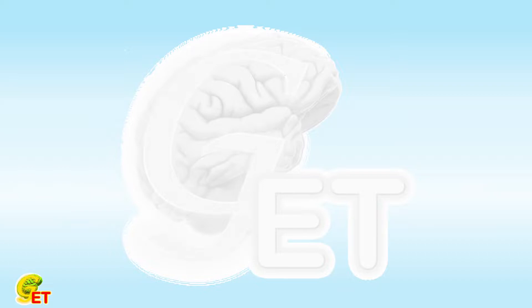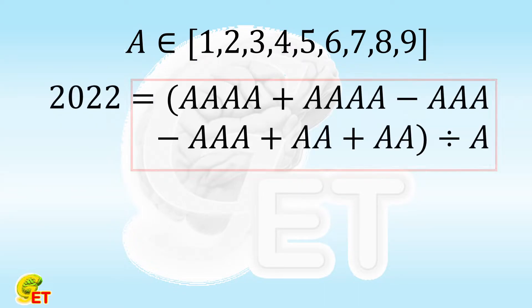Hello, my friends. Welcome back. Yesterday, we proved that for any digit A selected from 1 to 9, 2022 can always be represented by A for up to 19 times, together with the elementary arithmetic symbols. Today we continue to discuss this topic.